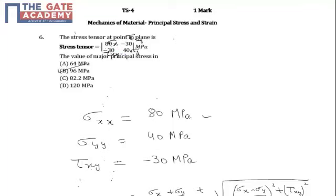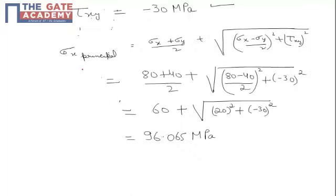So sigma x is 80, sigma y is 40, tau xy is minus 30, and it is asked what is the value of major principal stress.